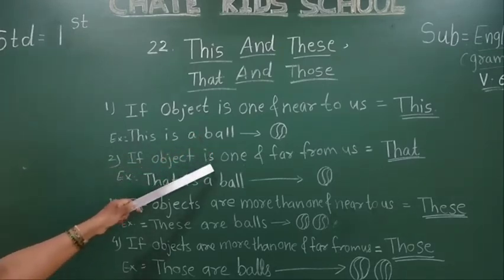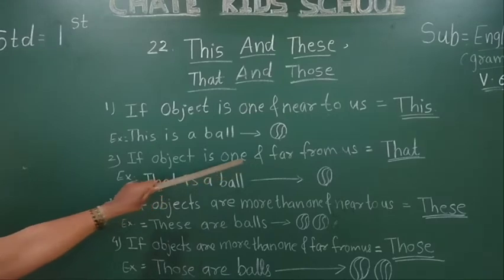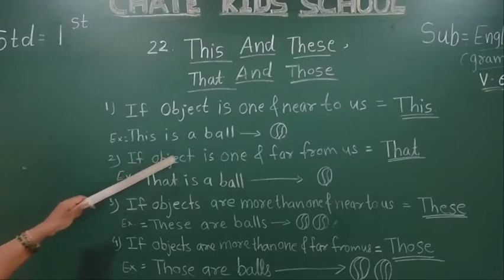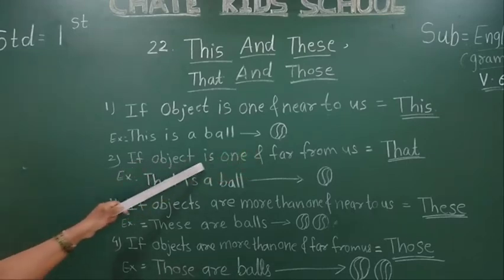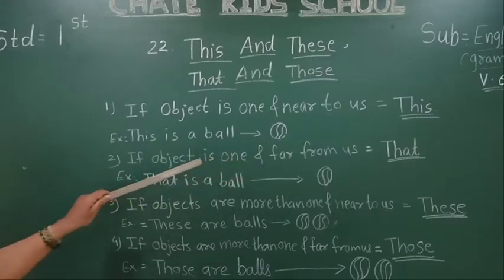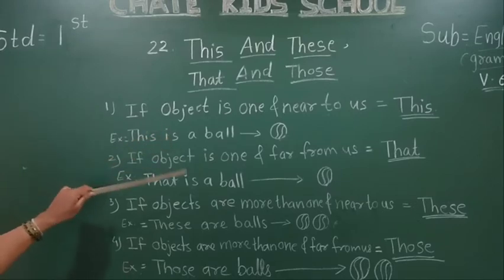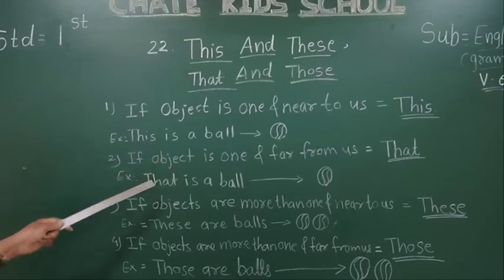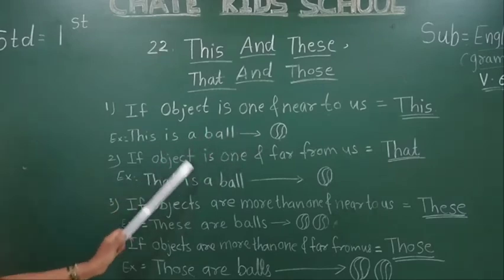If the object is one and far from us, then we will use 'That'. 'That' is used for a singular object that is far from us. For example: That is a ball.